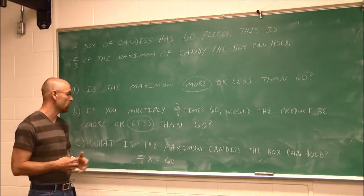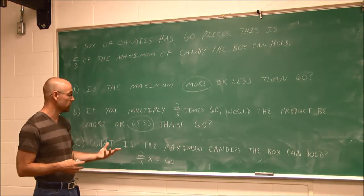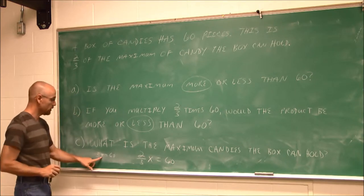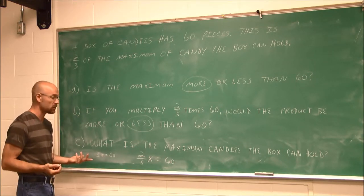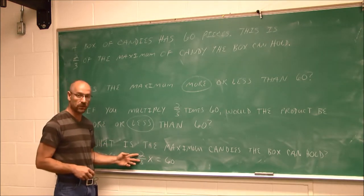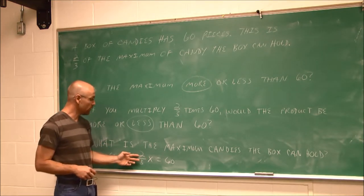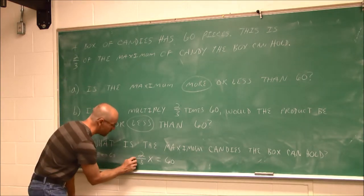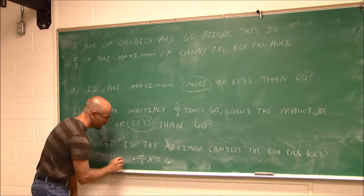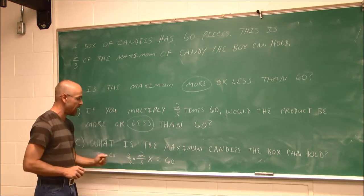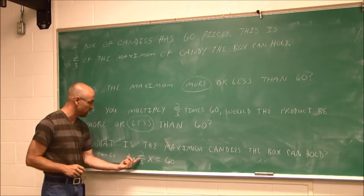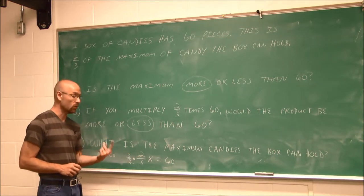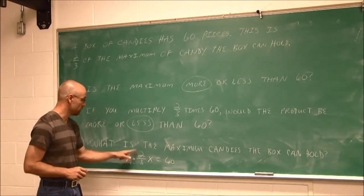So how do we go about solving this? We have to divide. If we recall, when we had questions such as 3x equals 60, to isolate the variable we would divide both sides by 3. Here we're going to divide both sides by a fraction. To divide by a fraction, we have to multiply by its reciprocal. So if I multiply by the reciprocal of 2 thirds, which is 3 halves, when we multiply a value by its reciprocal, we get 1.